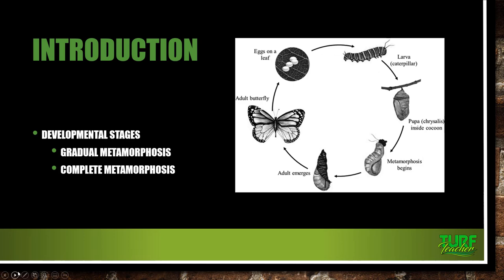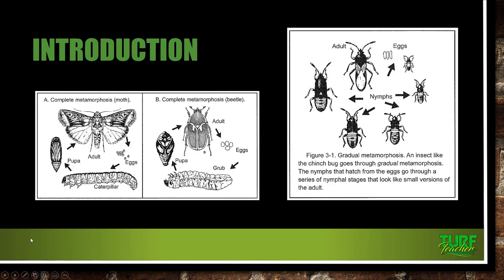They don't look anything like mom and dad as they go through these stages of development. Let's look at a butterfly. You have the eggs on the leaf, they go to the caterpillar stage, then to the pupa inside a cocoon, then metamorphosis begins, the adult emerges, and we have the adult butterfly. Butterflies and moths will have their babies called caterpillars. The chinch bug, as seen in figure 3-1, will go through gradual metamorphosis, and the little babies are mini-me's — they look like mom and dad.